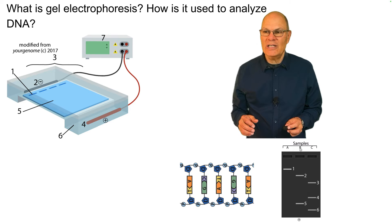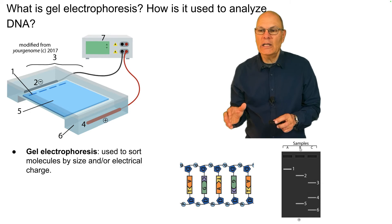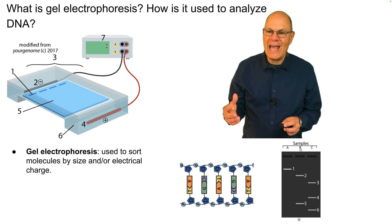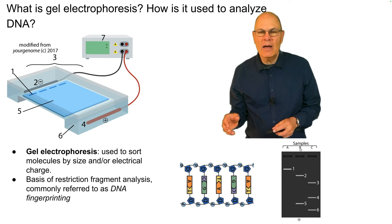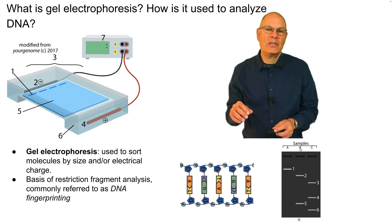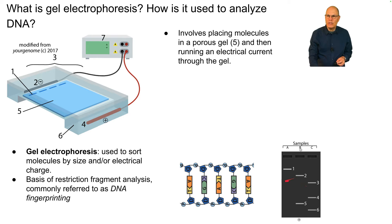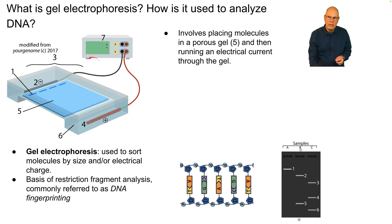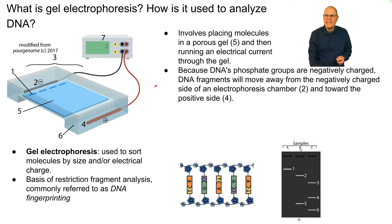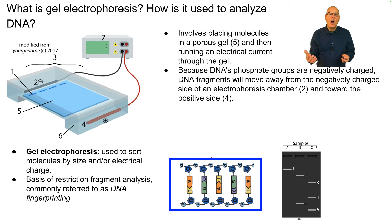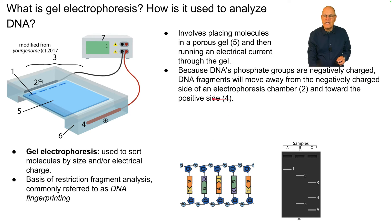What is gel electrophoresis and how is it used to analyze DNA? Gel electrophoresis is a technique used to sort molecules by size and/or electrical charge. It is the basis of restriction fragment analysis, also called DNA fingerprinting, widely used in forensics. It involves placing molecules in a porous gel inside an apparatus that produces an electrical current run through the gel.